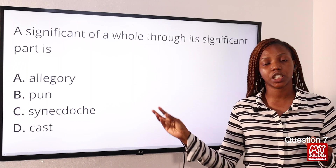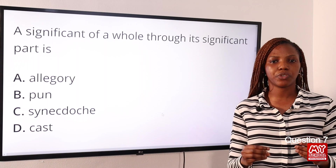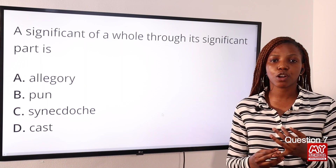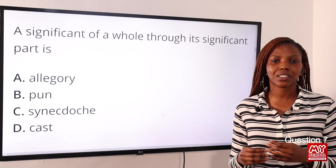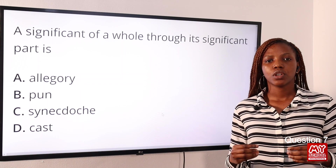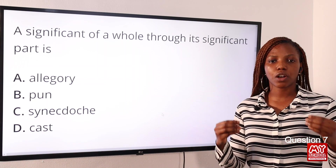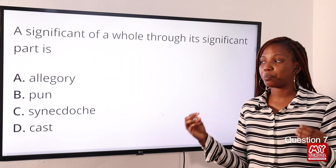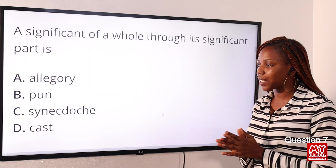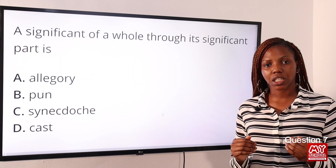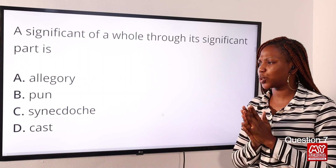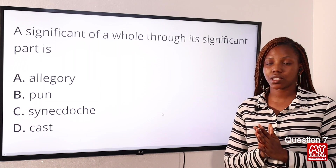Option A, allegory, is a device that delivers a broader message — a picture, person, or character used to symbolize a broader concept or idea. Option B, pun, is a play on words. Cast is the list of all characters in a drama or prose text. So the answer to this question is Option C: synecdoche.